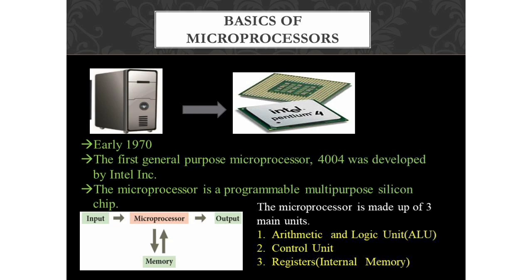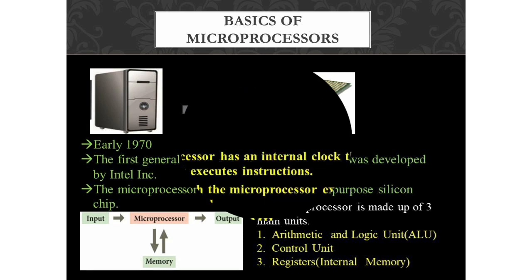The second unit is the Control Unit, which is mainly used to control the overall operation of a computer through signals. The third unit is Registers, also known as internal memory. Registers are used to hold intermediate instructions and data for the execution of a processor — intermediate results are stored in registers. These are the three main units of the microprocessor.